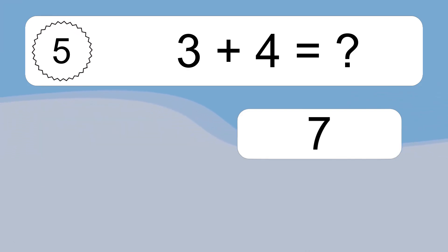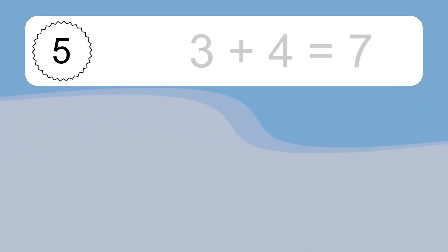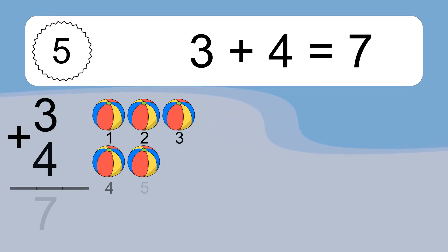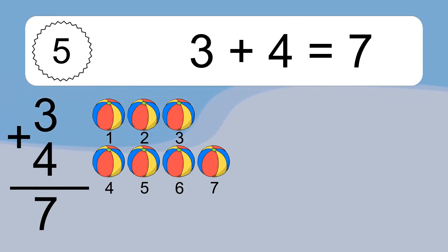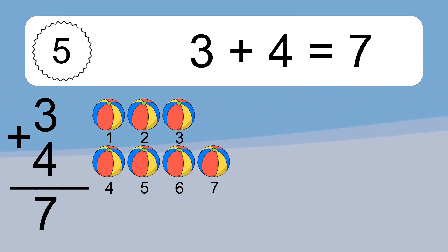3 plus 4 equals what? 3 plus 4 equals 7. Let's count it: 1, 2, 3, 4, 5, 6, 7.